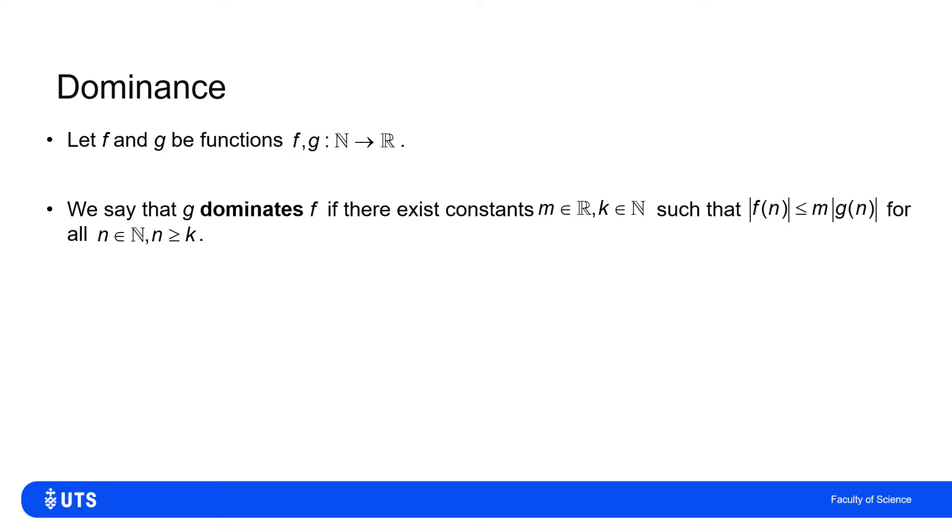Now that's a very symbol-heavy definition, but all it says is that after the k-th input n, from this point onwards, f in absolute value will be less than or equal to m lots of g in absolute value. So I could say that after a certain point in the long run for n larger than k, it will be below this bound of m lots of the absolute value of g.